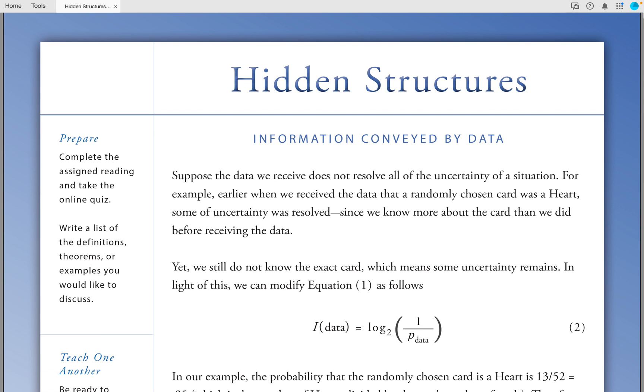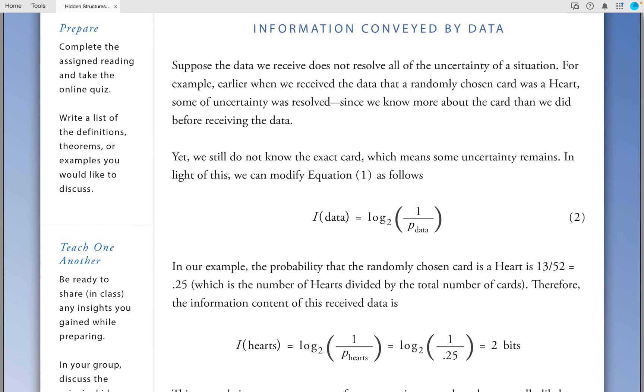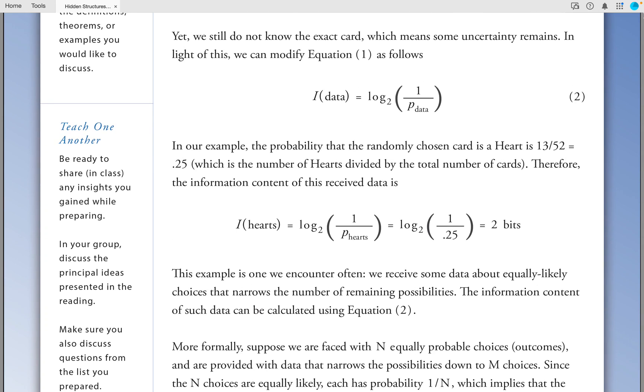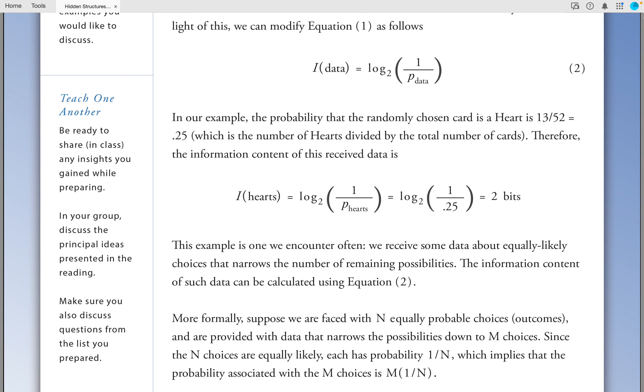Information conveyed by data. Suppose the data we receive does not resolve all of the uncertainty of a situation. For example, earlier when we received the data that a randomly chosen card was a heart, some uncertainty was resolved, since we now know more about the card than we did before receiving the data. We still do not know the exact card, which means some uncertainty remains. In light of this, we can modify equation 1 as follows: I(data) = log base 2 of 1 over p sub data. In our example, the probability that the randomly chosen card is a heart is 13 out of 52, which is equal to 0.25, which is the number of hearts divided by the total number of cards.